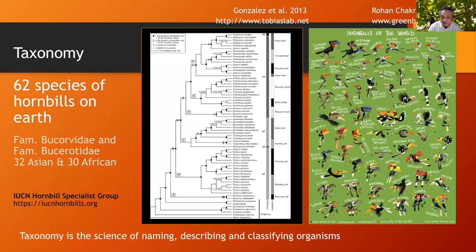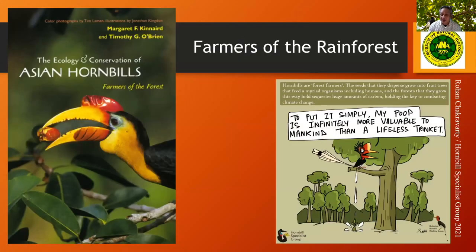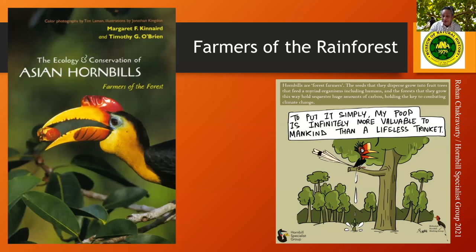This is a result of my paper looking into the relationships of each of the species of hornbills. Hornbills are recognized as farmers of the rainforest. One of the books I admire is by Margaret Kennard and Timothy O'Brien — an amazing collection of stories and facts about hornbills, the ecology and conservation of Asian hornbills. That was one of the drivers which led to my own dissertation, because one of the gaps was that there was no phylogeny of hornbills and systematics was vague at the time.